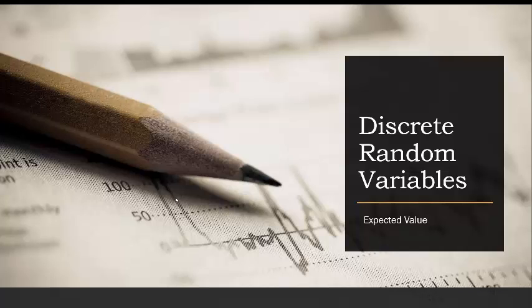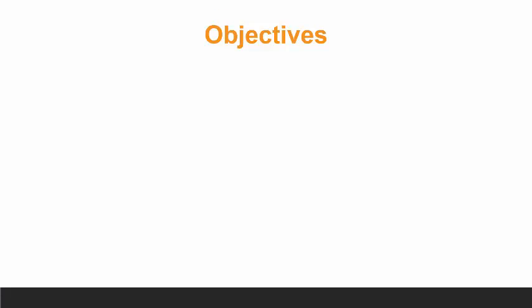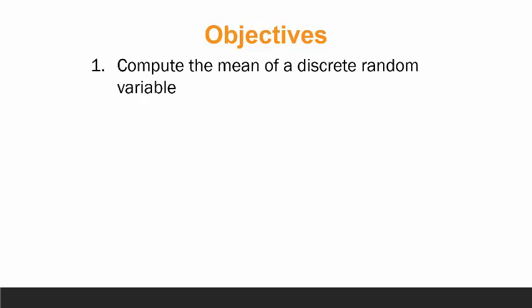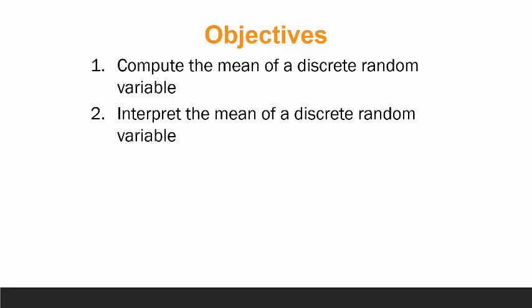In this lecture we want to continue our discussion of discrete random variables by talking about something called the expected value. The expected value is also synonymous with the mean of a discrete random variable. We have two objectives in this lecture: first, to compute the mean of a discrete random variable, and second, to interpret the mean — what is the meaning of the average of a discrete random variable.